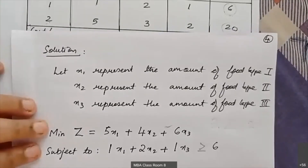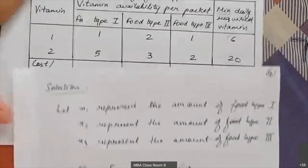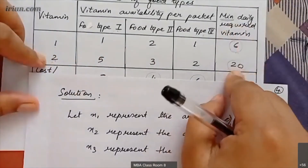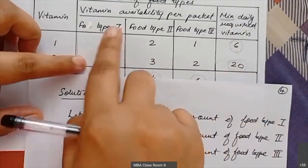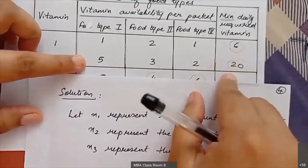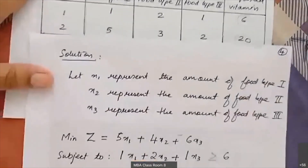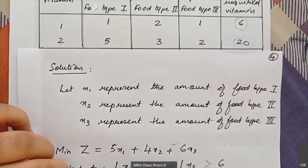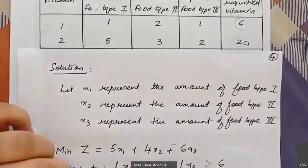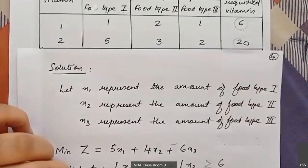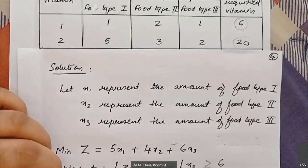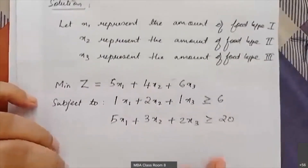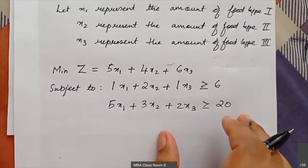The second constraint is for vitamin two, whose minimum daily requirement is 20 units. From the table, the equation is 5x1 + 3x2 + 2x3 ≥ 20. Again, we use the greater-than-or-equal-to symbol because 20 is the minimum requirement value, meaning the left-hand side expression must be at least 20.